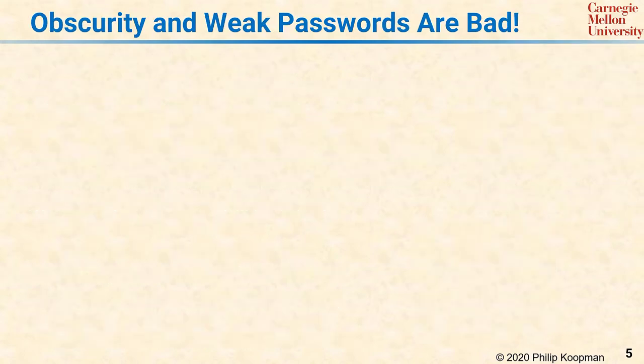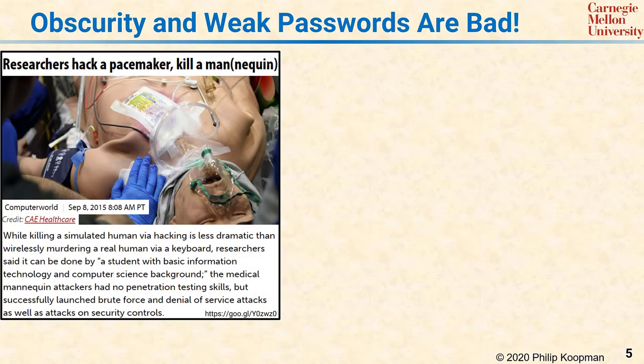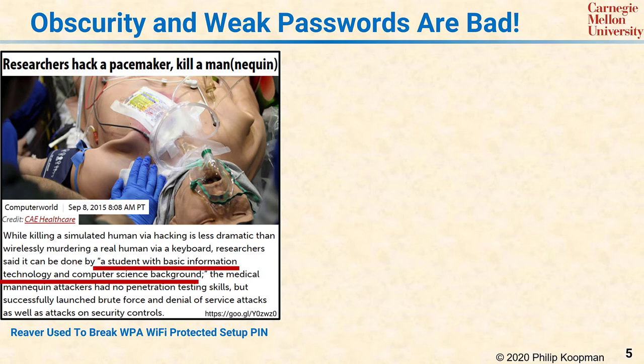Just to reinforce the importance of some of these points, here are three real-world examples of system failures. In 2015, some students were able to hack into a pacemaker — fortunately it was only a simulated patient. But these were not security experts. Rather, students with a basic background in IT and computer science were able to brute force a Wi-Fi protected setup PIN using off-the-shelf hacking tools.